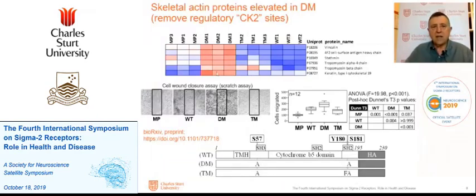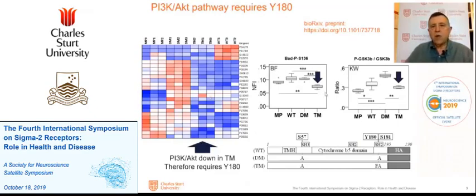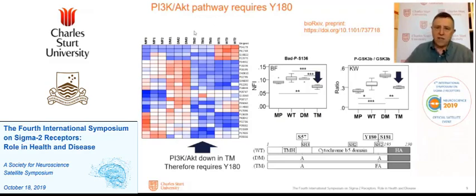Looking at the actin cytoskeleton — about half a dozen proteins are involved. When we tried to verify this with scratch migration assays, we see that double mutant cells indeed have higher migratory activity. For PI3 kinase activity, the proteomics predicts it to be down in the triple mutant. When we look at BAD or glycogen synthase kinase 3 phosphorylation, both are reduced in triple mutant relative to double mutant. So we can say that PI3 kinase activity requires tyrosine 180.